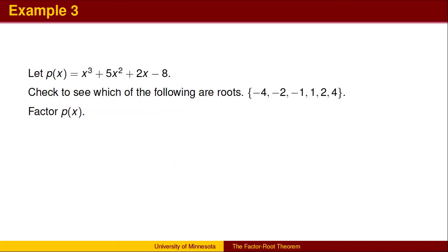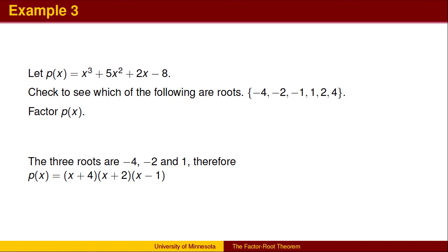Here is a final example for you to try. You are given a list of possible roots. Plug each potential root into the polynomial p of x to see which numbers are roots. Once you have found the roots, you will know the factors. You may wish to pause the video to work out the answer. There are three roots: negative 4, negative 2, and 1. Therefore, the three factors are x plus 4, x plus 2, and x minus 1.